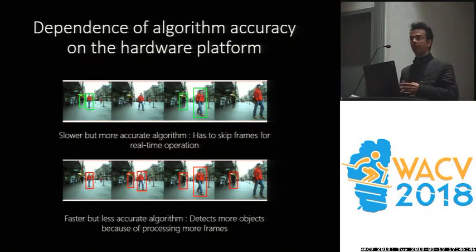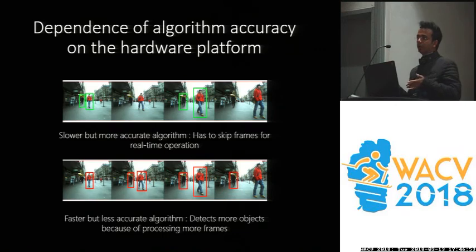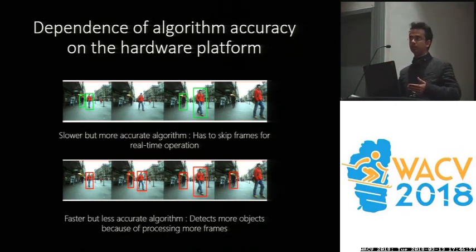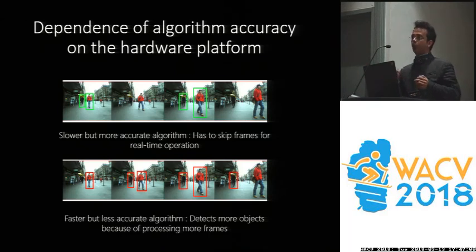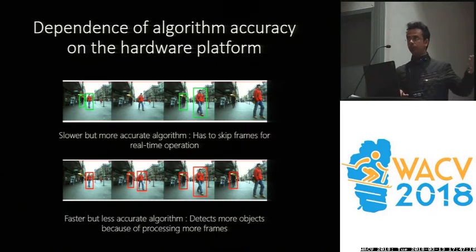However, a faster but less accurate algorithm would be able to process more frames as it goes. Maybe it is not able to detect the objects in all frames because it does not have good accuracy, but it should be able to detect objects in at least one of the frames. That would enable it to capture these objects regardless of the complete video stream.